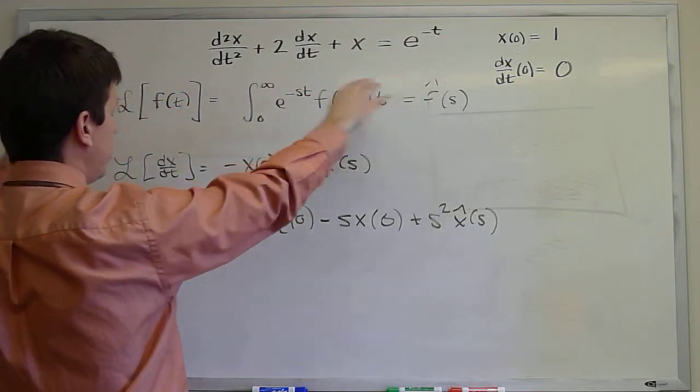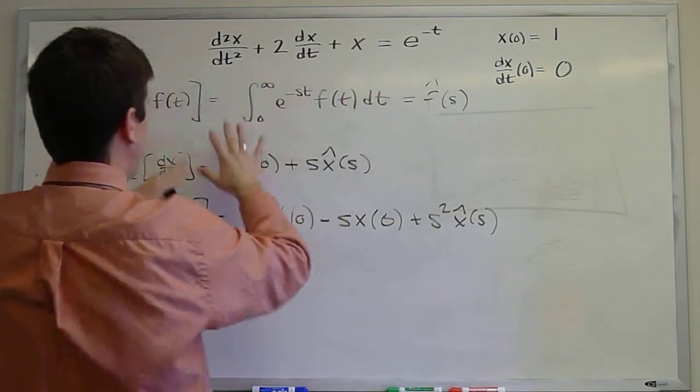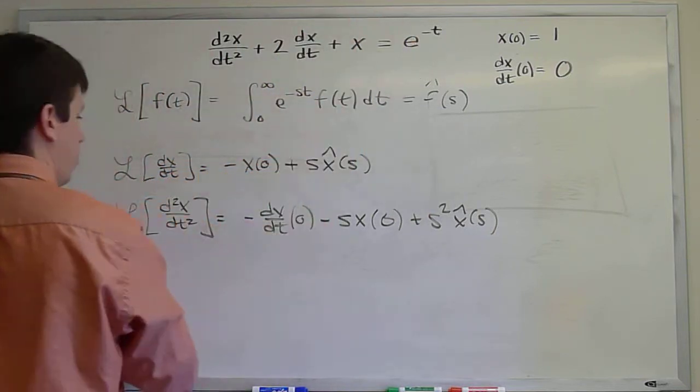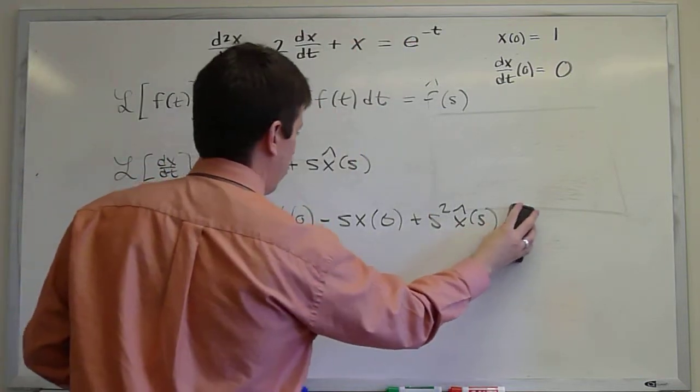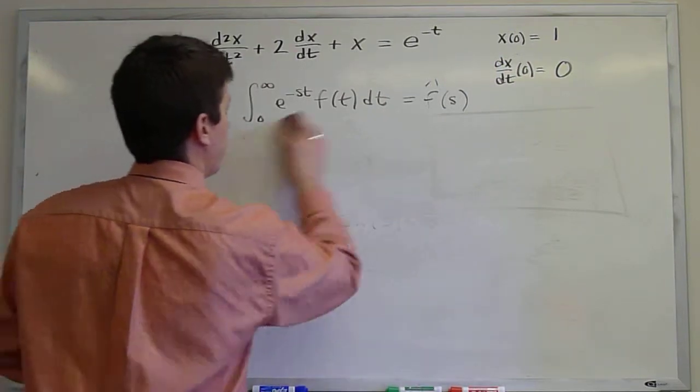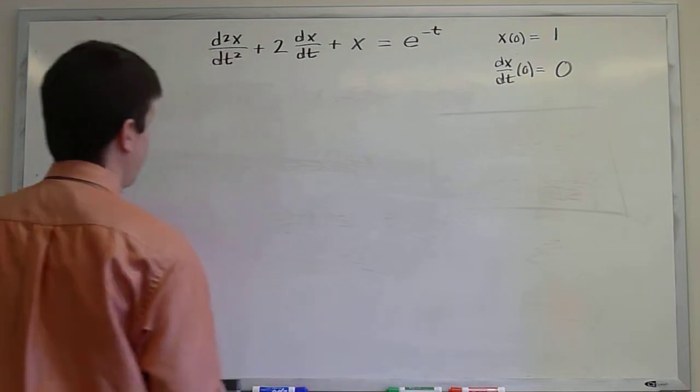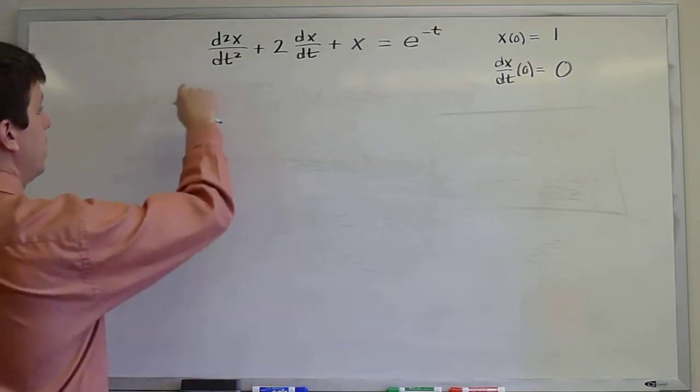If we take the Laplace transform of both sides, we'll get various terms of this form in our derivatives, and then we'll have to take the Laplace transform of e to the minus t, and we'll be in good shape to then solve the problem. So after that brief reminder of the method, let's go ahead and do it.